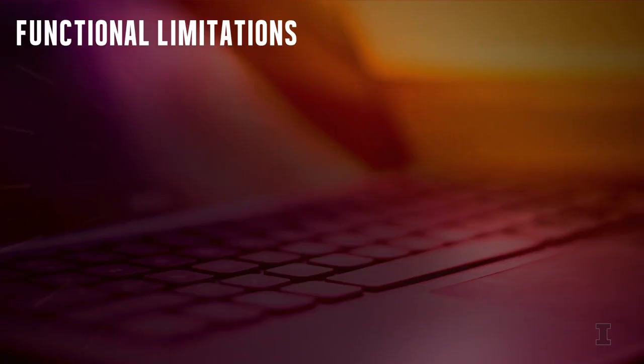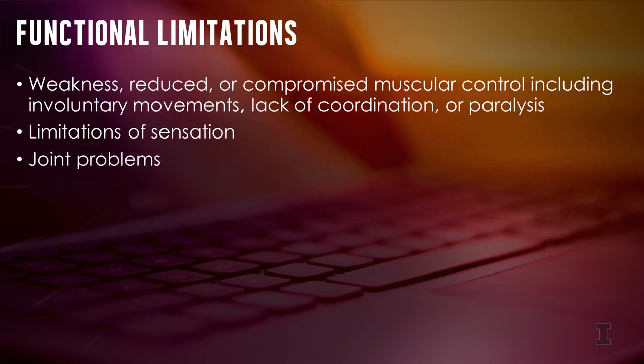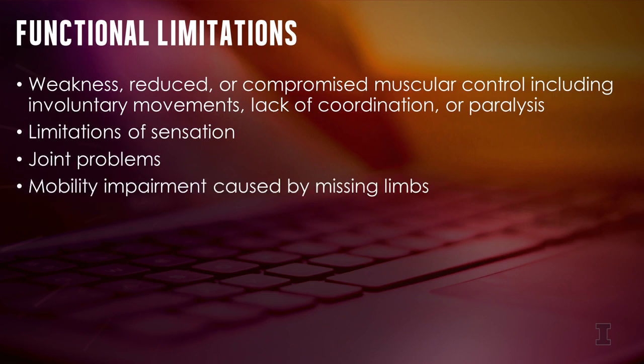Functional limitations of individuals with motor impairment can include weakness, reduced or compromised muscular control such as involuntary movements, lack of coordination or paralysis, limitations of sensation, joint problems, mobility impairment brought about by missing limbs, and pain that impedes movement. Mobility impairment can affect the hands and arms as well as other parts of the body.